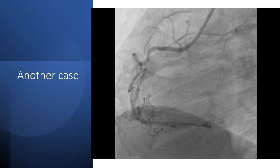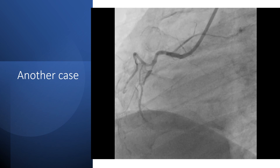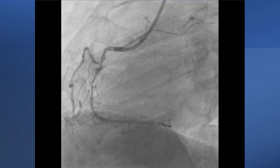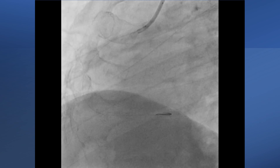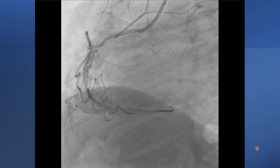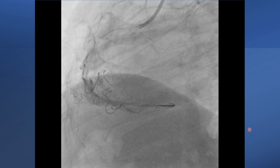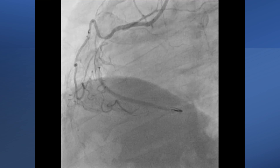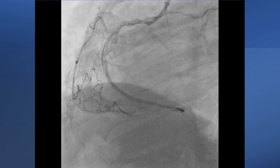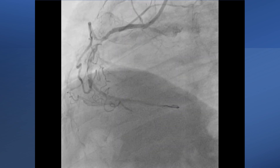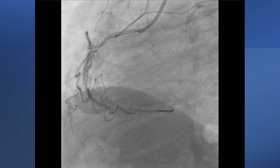In another case, the RCA was involved. Some force was used by the operator to pass the wire. The wire passed easily up to the distal part of the vessel. It actually caused extensive dissection. And this is a lesson — easy passage of the wire across the entire length of the vessel does not always mean that it's intraluminal, especially in acute coronary syndrome.